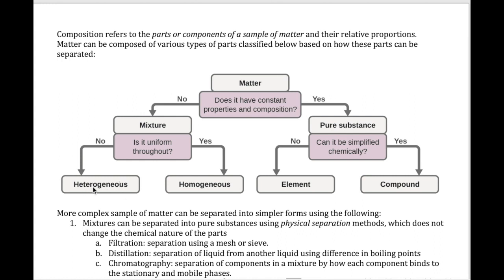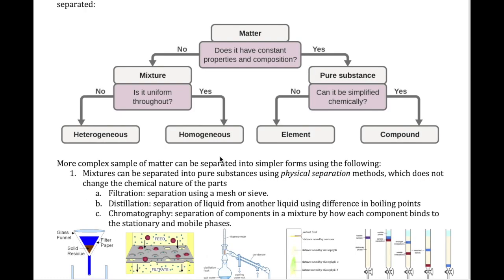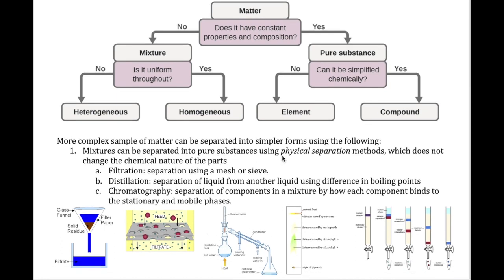Heterogeneous mixtures, on the other hand, are very easy to see. If you have sand and water, it's pretty clear there's a solid — the sand — and a liquid — the water. Another example of a heterogeneous mixture is oil and water, like in salad dressing. If you leave salad dressing in a container, you can clearly see it separate into its oil component and its water component.